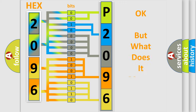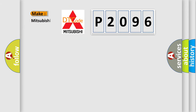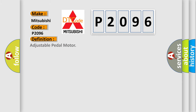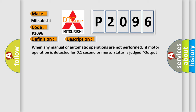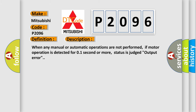The number itself does not make sense to us if we cannot assign information about what it actually expresses. So, what does the diagnostic trouble code P2096 interpret specifically for Mitsubishi car manufacturers? The basic definition is: Adjustable pedal motor. This is a short description of this DTC code: when any manual or automatic operations are not performed, if motor operation is detected for one second or more, the status is judged as output error.